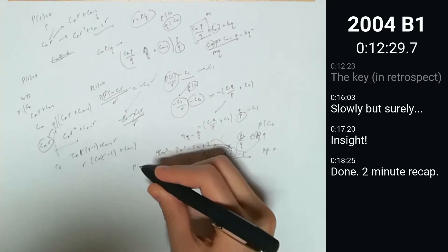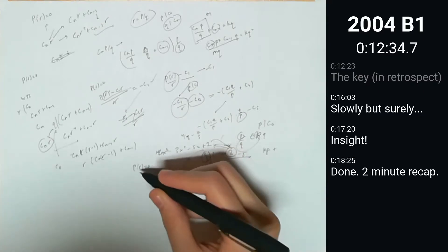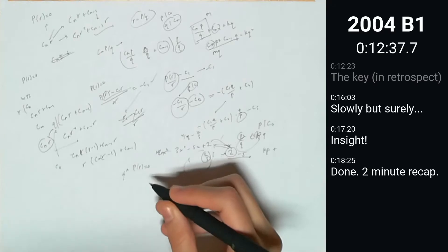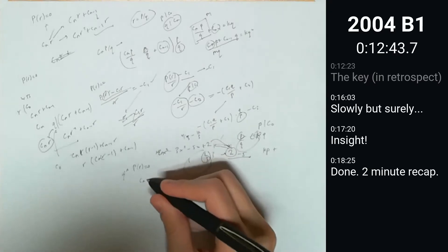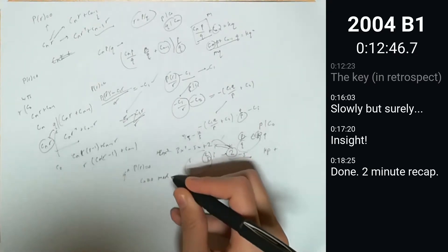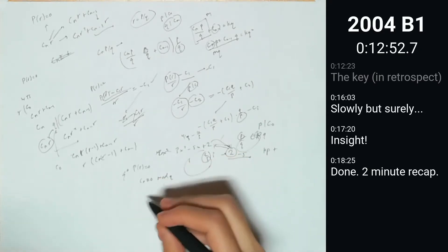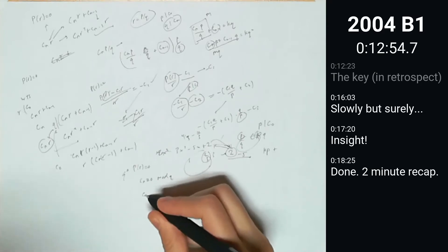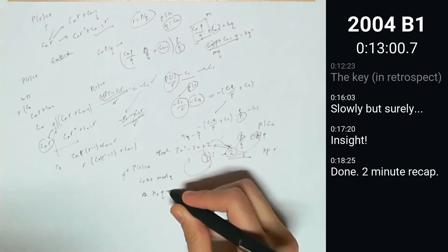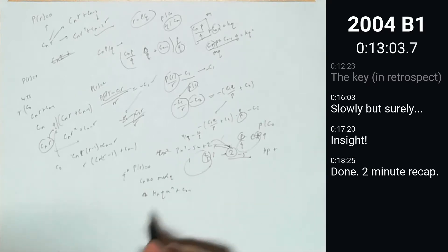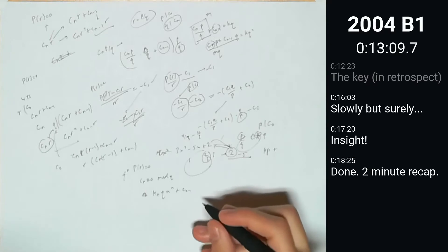If we know the polynomial is 0 at r, we can multiply this by q to the n and then look at the entire polynomial modulo q. That would mean that c_n is equivalent to 0 mod q, which we already knew. What we can do is, since c_n is 0 mod q, rewrite it as k times q.